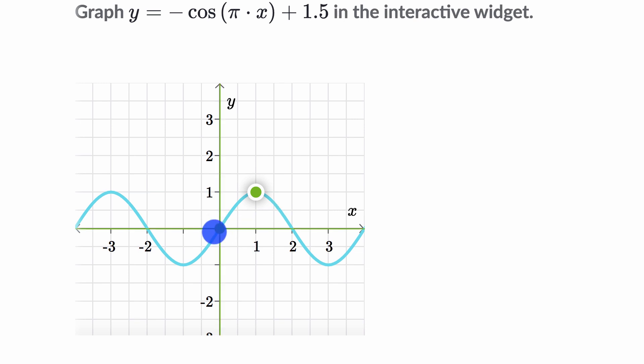To explain how this widget works if you're trying to do it on Khan Academy, this dot right over here helps define the midline. You can move that up and down. And then this one right over here is a neighboring extreme point, so either a minimum or a maximum point.